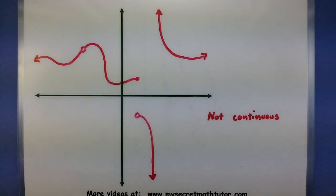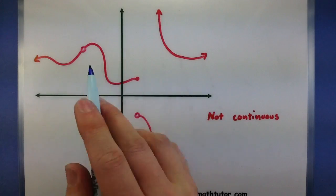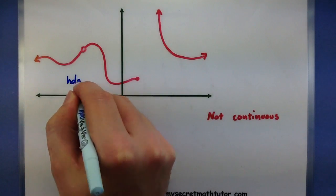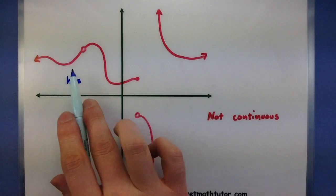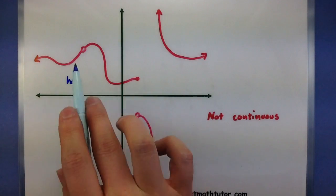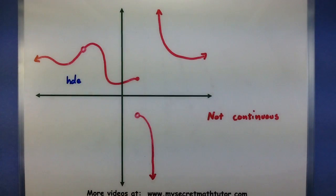So the first problem of being continuous is with this hole right here. If I was to try and draw this graph, I would have a problem because I'd have to lift my pencil and then put it back down to go over that hole.